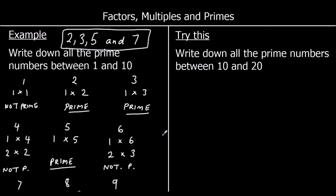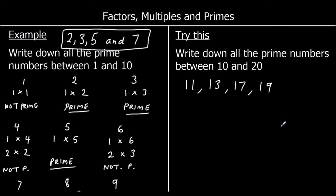Pause the video and write down all the prime numbers between 10 and 20. You should find that 11 is prime — it's only 1 times 11. 12 is in the 2 times table, so it can't be prime. 13 is only 1 times 13, so it's prime. 15 is in the 3 times table: 3 times 5, so it's not prime. Any even number is in the 2 times table, so all even numbers apart from 2 are not prime — so 16 is not prime. 17 is only 1 times 17, so it's prime. 18 is even, so it's not prime. 19 is a prime number — only 1 times 19. And 20 is even, so it's not prime.